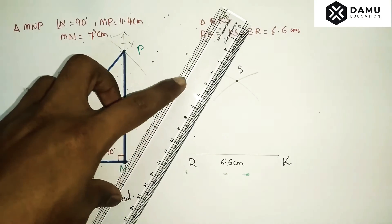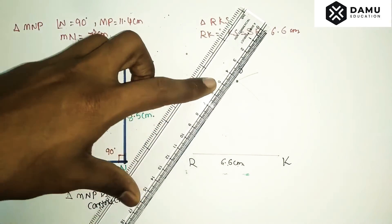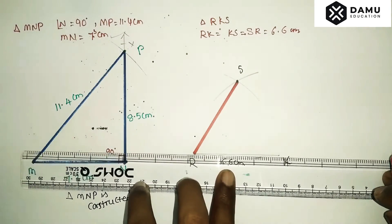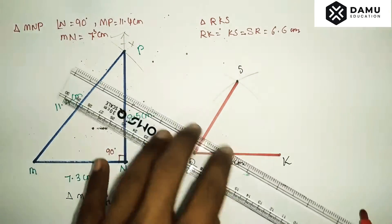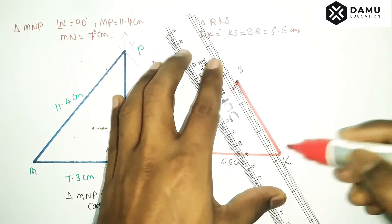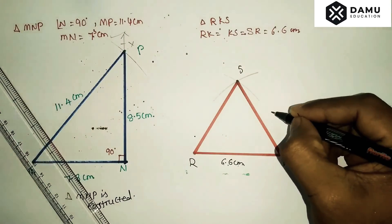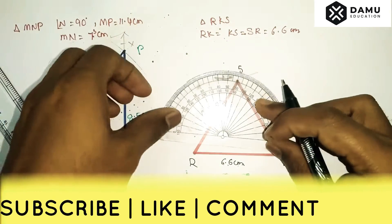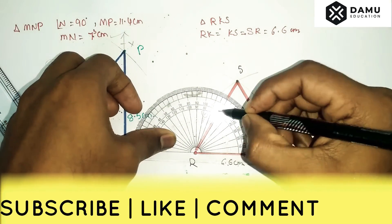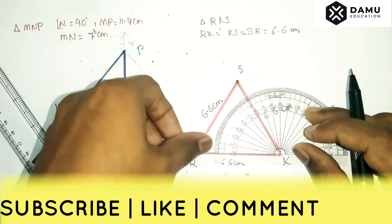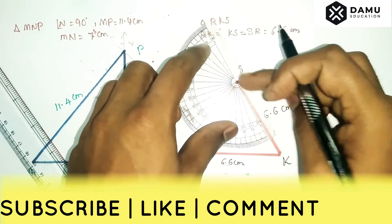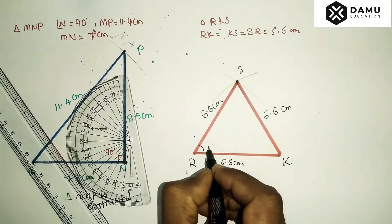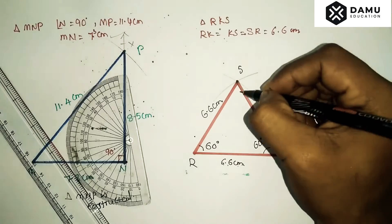Where the two arcs coincide, that point is S. Join all the line segments: RK, RS, and SK — all are 6.6 centimeters. If you measure the angles, you will get 60 degrees at each, because in an equilateral triangle all angles are 60 degrees. Place your protractor and verify: each angle measures 60 degrees.